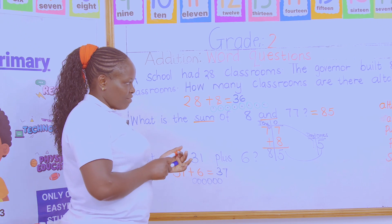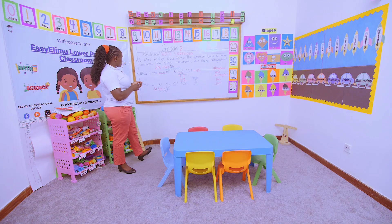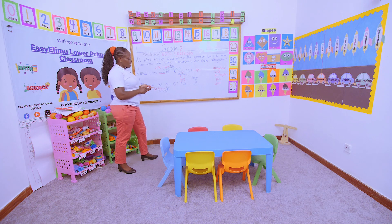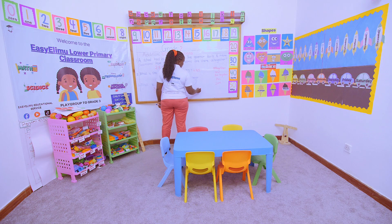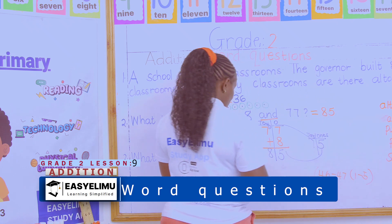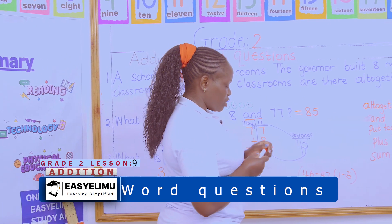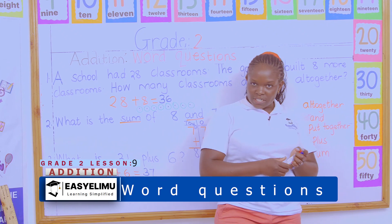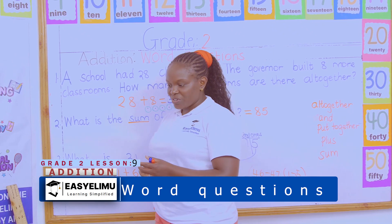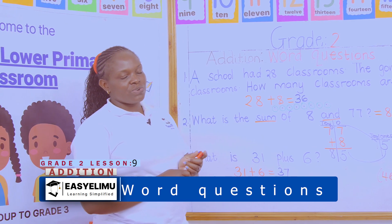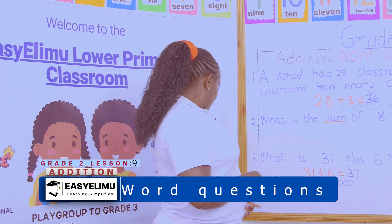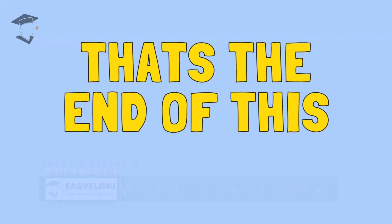Any questions? Now we have 5 questions in our textbook — those are the questions we are carrying today for homework. That is on page 46 to 47, numbers 1 to 5. You go home and with the help of your guardians, I want to see that work done. Any questions? Very good — I hope to see you in the next lesson. Thank you.